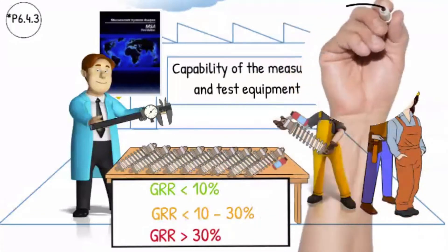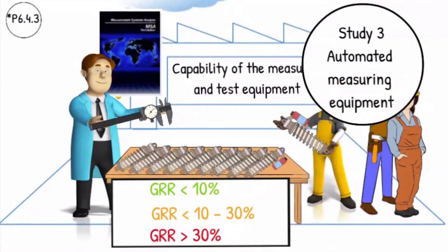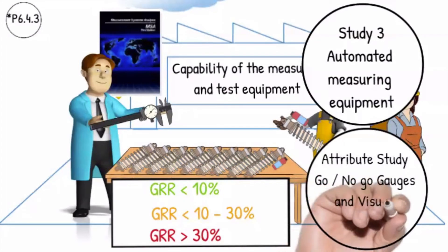A Study 3 test is also performed on automated measuring equipment where the operator has no influence. Finally, an attribute study needs to be done for all go and no-go gauges and for visual inspection requirements.